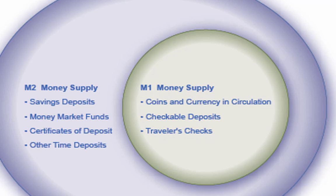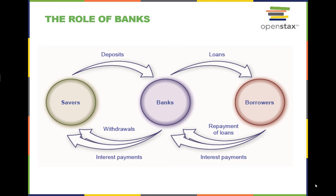These definitions allow for the measurement and tracking of the money supply. Banks act as financial intermediaries because they stand between savers and borrowers. Savers place deposits with banks and then receive interest payments and withdraw money. Borrowers receive loans from banks and repay the loans with interest.